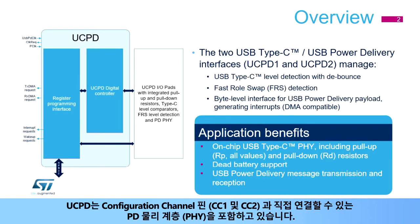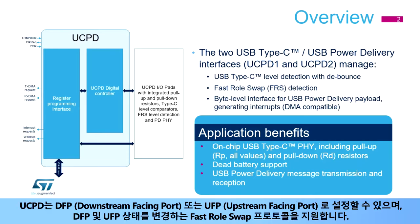The UCPD units embed a PD physical layer, or PHY, with a direct connection to the configuration channel pins CC1 and CC2. The UCPD can be configured as a downstream-facing port (DFP) or an upstream-facing port (UFP), and also supports the fast role swap protocol that enables swapping DFP and UFP states.